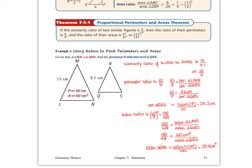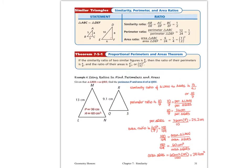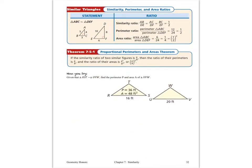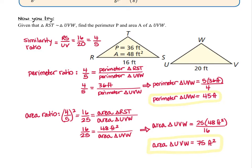On the next page there is a Now You Try: given that triangle RST is similar to triangle UVW, find the perimeter P and area A of triangle UVW. Remember to start by finding the similarity ratio. Turn the video back on when you're ready to check your work. Using the Proportional Perimeters and Areas Theorem, we find the perimeter and area of triangle UVW using the known information from triangle RST.